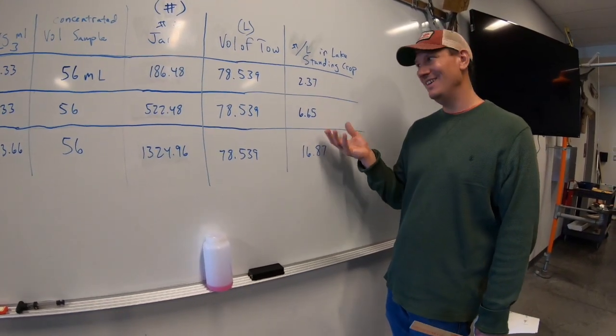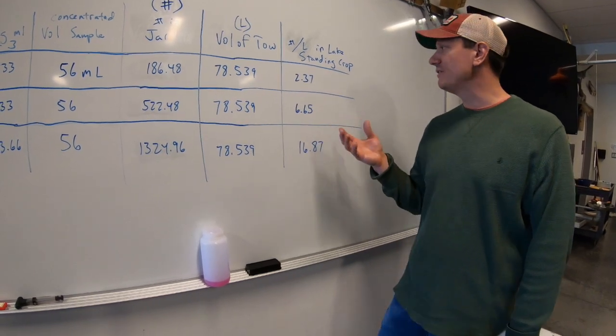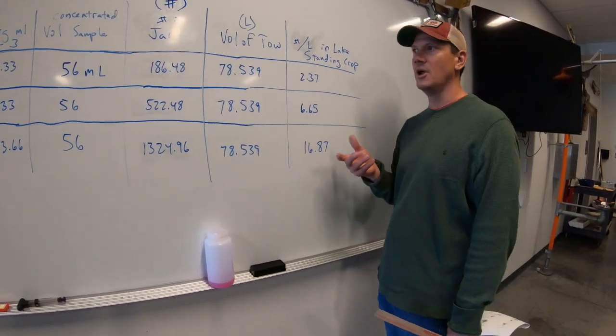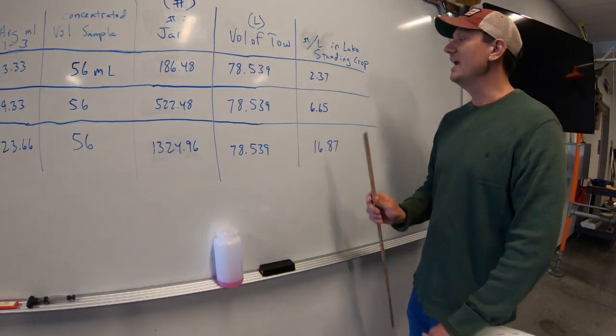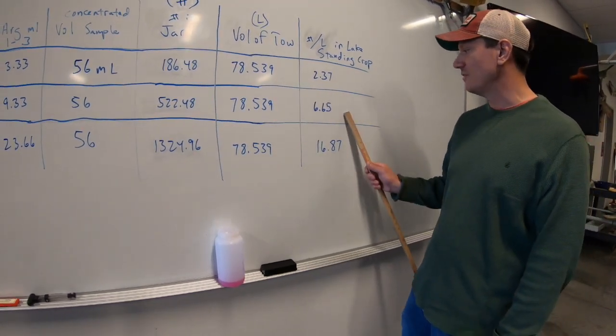Now, what's a good value for spring? This is okay. Once we get into summer, we would really want to be pushing 150 planktors per liter. And sometimes the balance of these things is important.